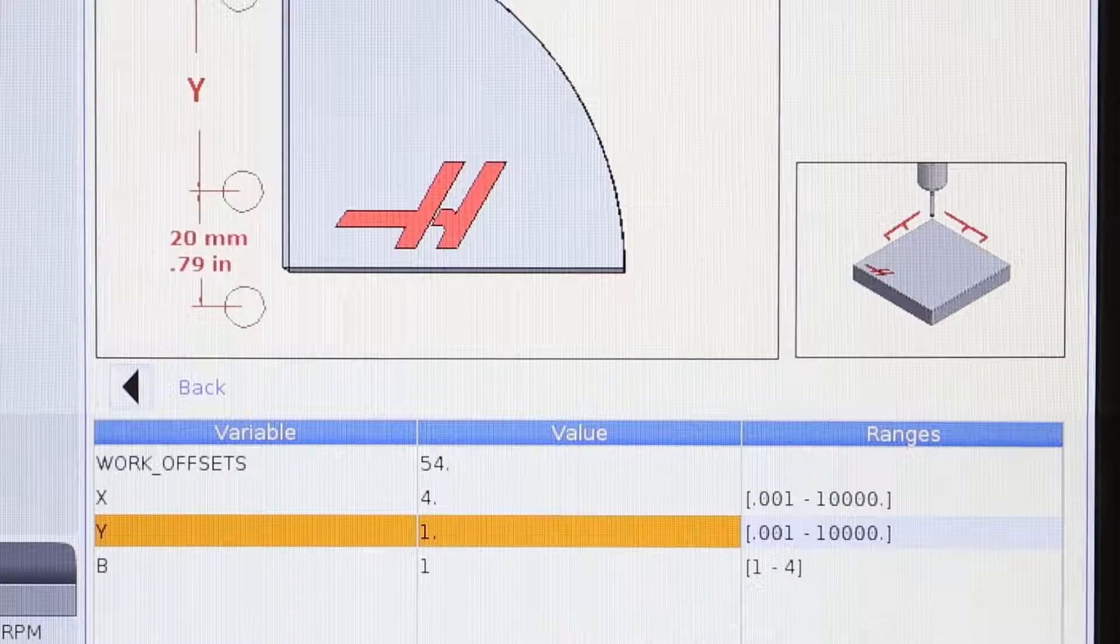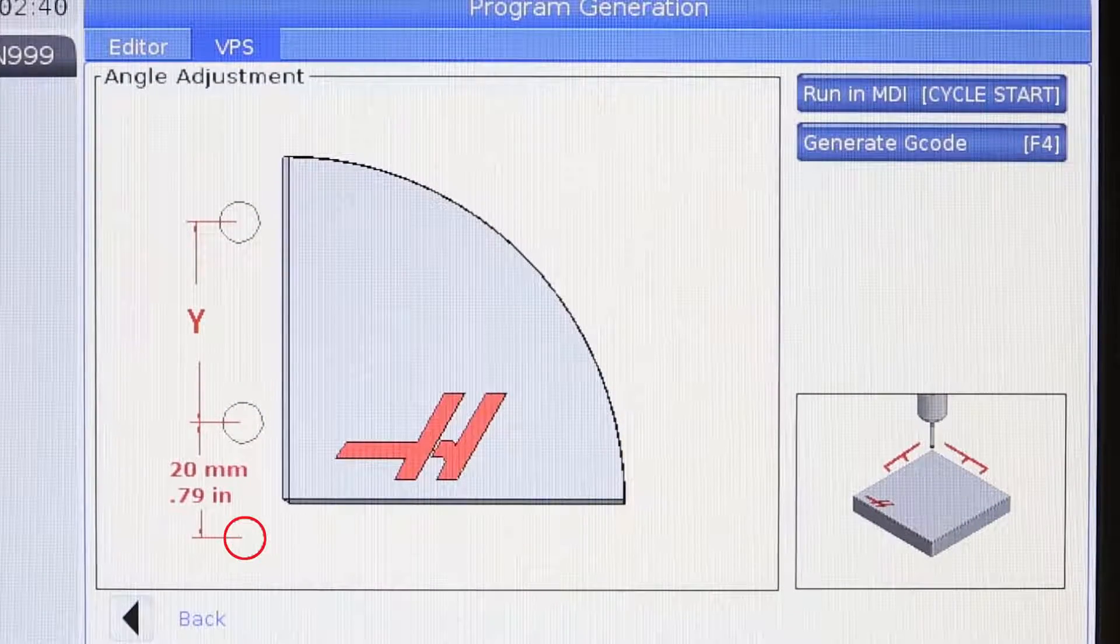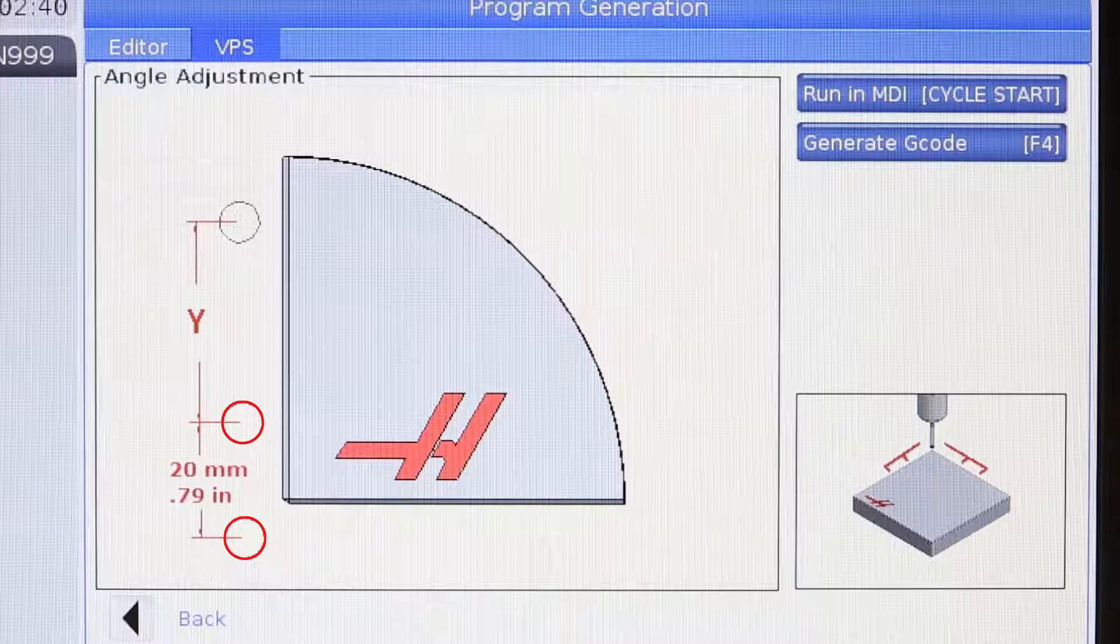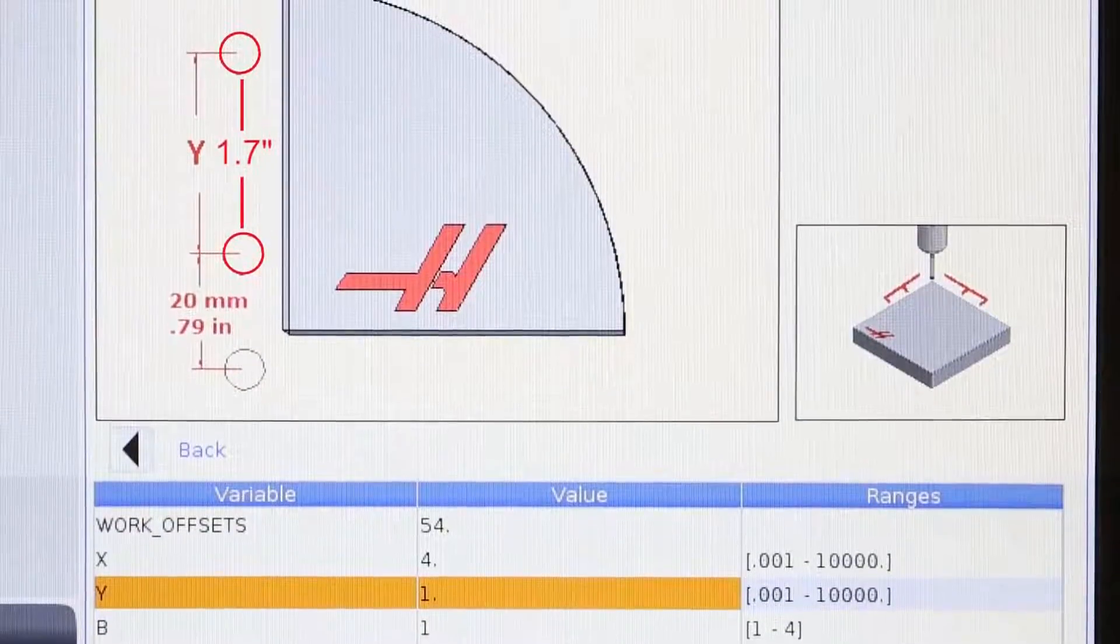Question three, same thing for the Y axis. We're gonna handle jog in front of the corner of the part. When it comes time to probe, the control is gonna move the probe up 20 millimeters before it takes that first probe hit. How far we want it to go for that second hit? I'm gonna enter 1.7 inches.